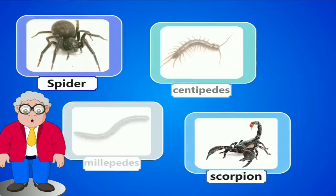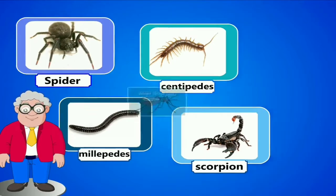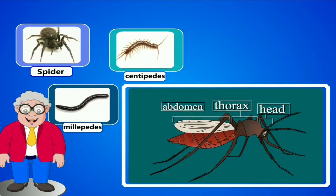We see small animals like spiders, scorpions, millipedes and centipedes around us. Are they insects? No, they are not insects. They do not have six legs or four wings like insects.